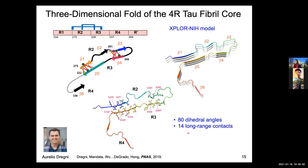Aurelio put all chemical shift constraints — translated to dihedral angle constraints — plus these 14 long-range contacts into XPLOR-NIH for structural modeling. This low-resolution, sparsely constrained calculation supports the hairpin schematic. Beta strand 1 contacts beta strand 5, and beta strand 3 containing cysteine 291 contacts the beginning of R3, which is beta strand 4. The structural model also suggests which residues form the steric zipper face between adjacent beta strands.